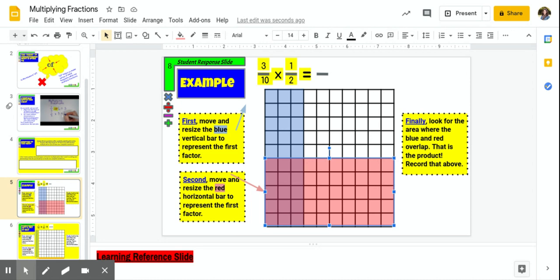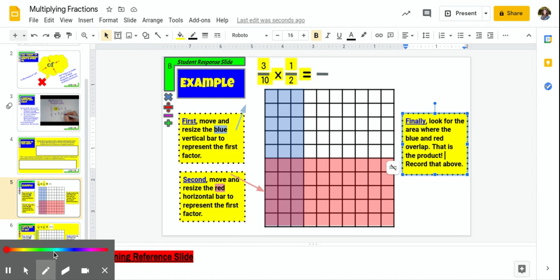Notice, boys and girls, both of my factors are represented. 3 tenths is represented here in the blue. 1 half is represented here in the red. But where the answer lies is where the blue and the red overlap.